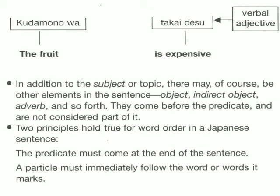Now, in addition to the subject or topic, there may of course be other elements in the sentence: object, indirect object, adverb, and so forth. They come before the predicate and are not considered part of it. Two principles hold true for word order in a Japanese sentence: the predicate must come at the end of the sentence, and a particle must immediately follow the word or words it marks.